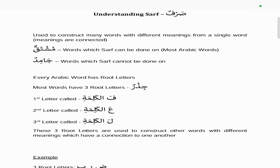Sarf is used to construct many words with different meanings from a single word, and the meanings are connected in some form or fashion. There are two types of words: one is called mushtaq — words which Sarf can be done on, and these are most Arabic words — and the other is jamid, which are words that Sarf cannot be done on.